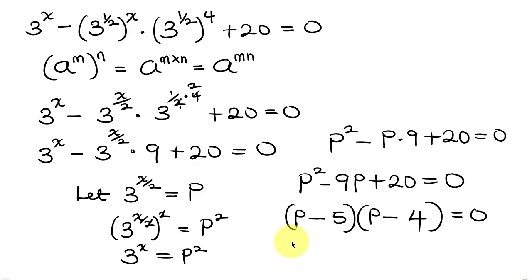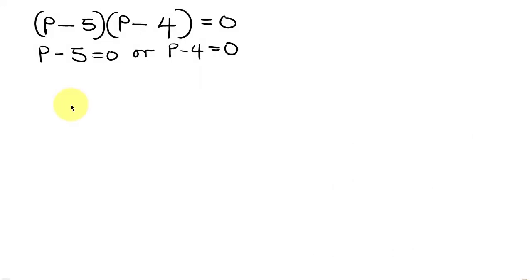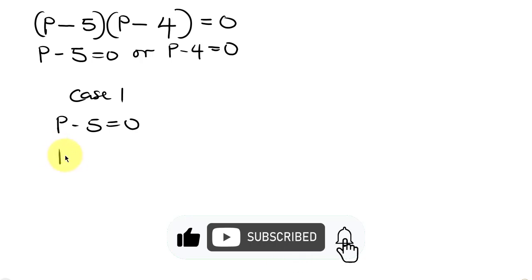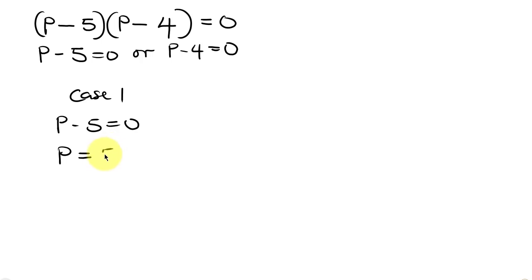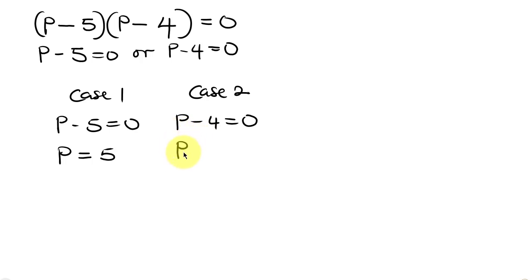We have two cases: p minus 5 equals 0, or p minus 4 equals 0. For case 1, p minus 5 equals 0 — moving negative 5 to the right gives p equals 5. For case 2, p minus 4 equals 0 — moving negative 4 to the right gives p equals 4. So we have two values of p: p equals 5 and p equals 4.